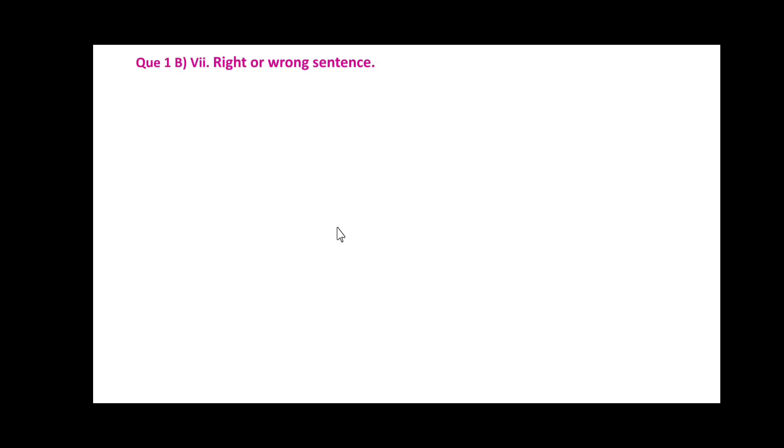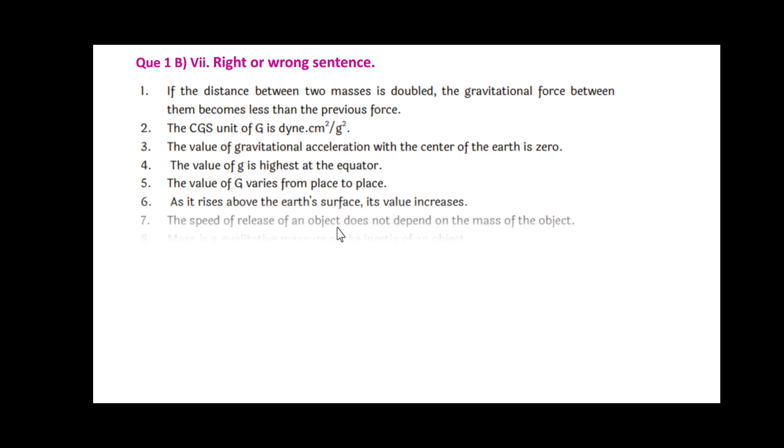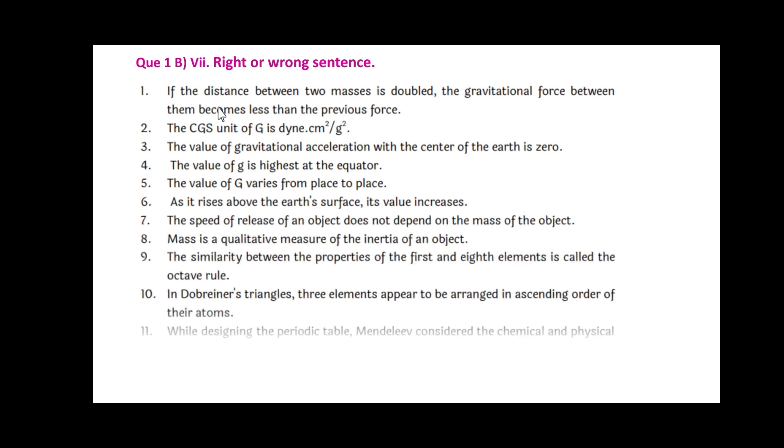Question number 1B, variety 7, right or wrong sentences, or you may state true or false. If the distance between two masses is doubled, the gravitational force between them becomes less than the previous force. This is right. The CGS unit of G is dyne cm² per gram square. This is right.